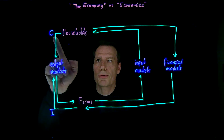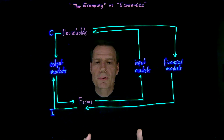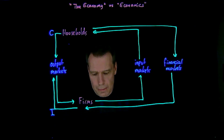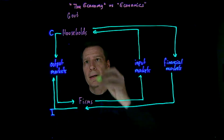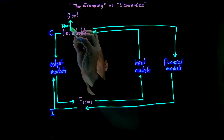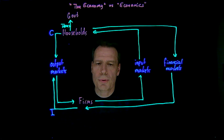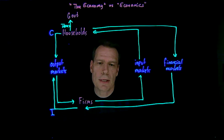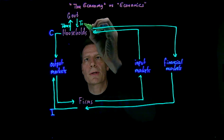So now we have households that consume, that sell their labor to firms, and that also save. But there's a third set of actors that households interact with, and that is the government. The government collects taxes, causing money to flow from households to the government. And the government makes transfers to households — they send checks in the form of Social Security checks, unemployment checks, welfare payments, or stimulus checks during recessions. We call those transfer payments.